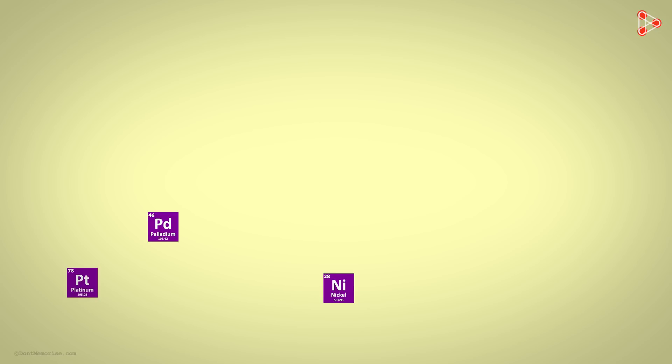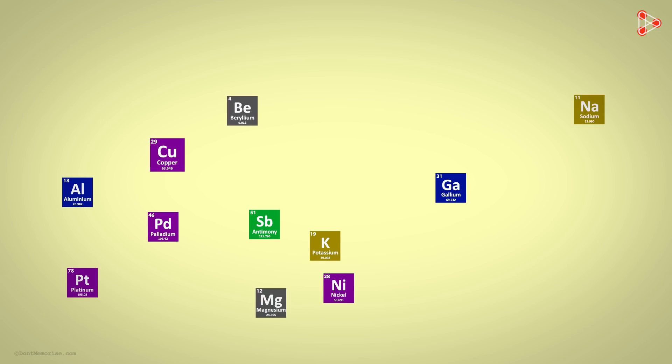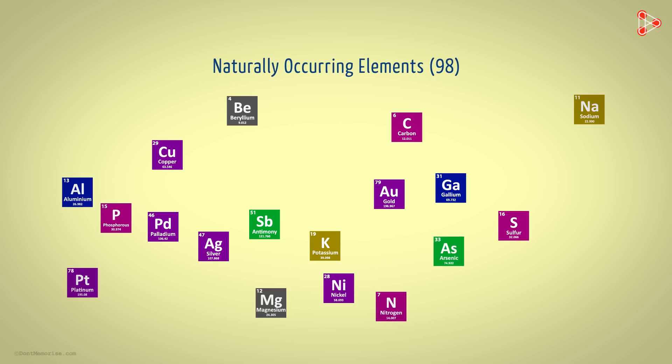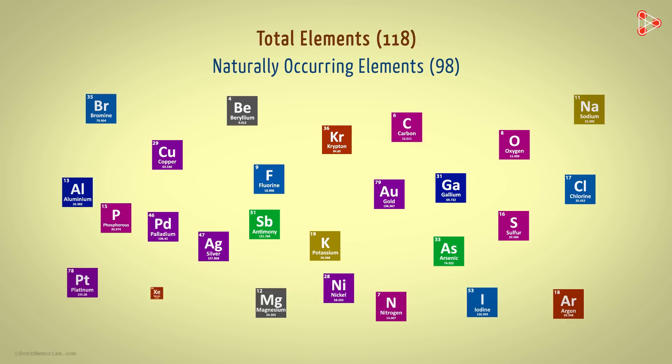Well, all these would have been valid only if the elements would be few in numbers. Do you know the number of elements that exist? Astonishingly, the number of elements that we find naturally occurring is 98, while the total number of elements known to mankind is 118.